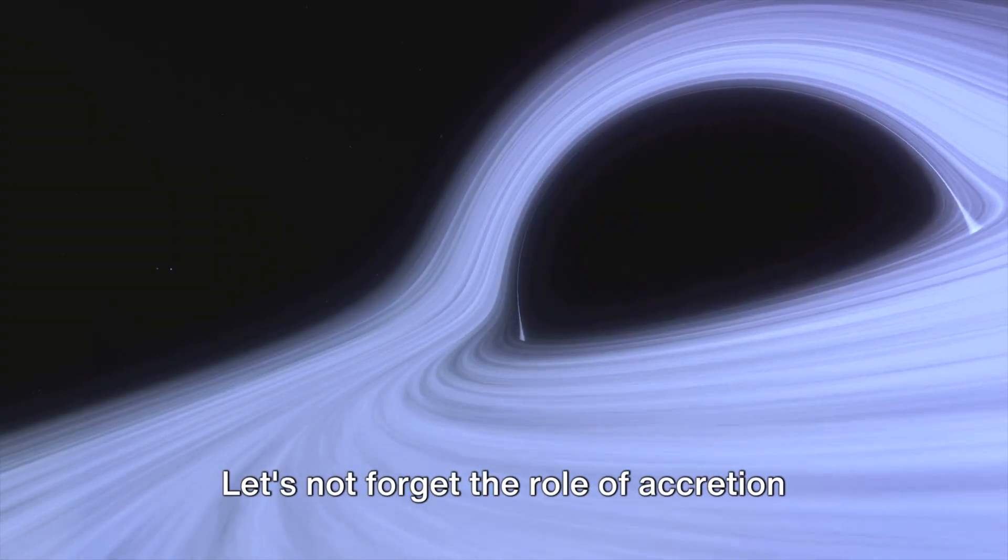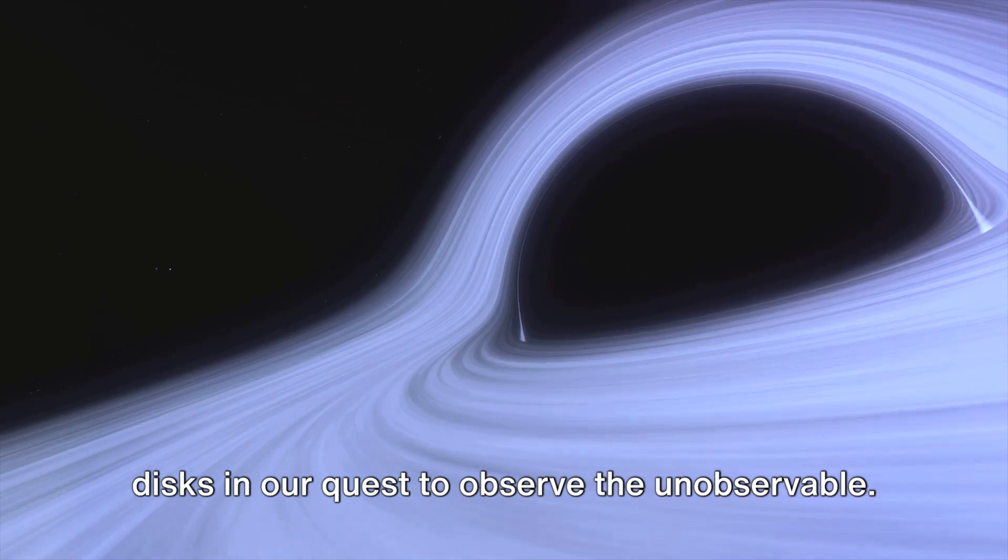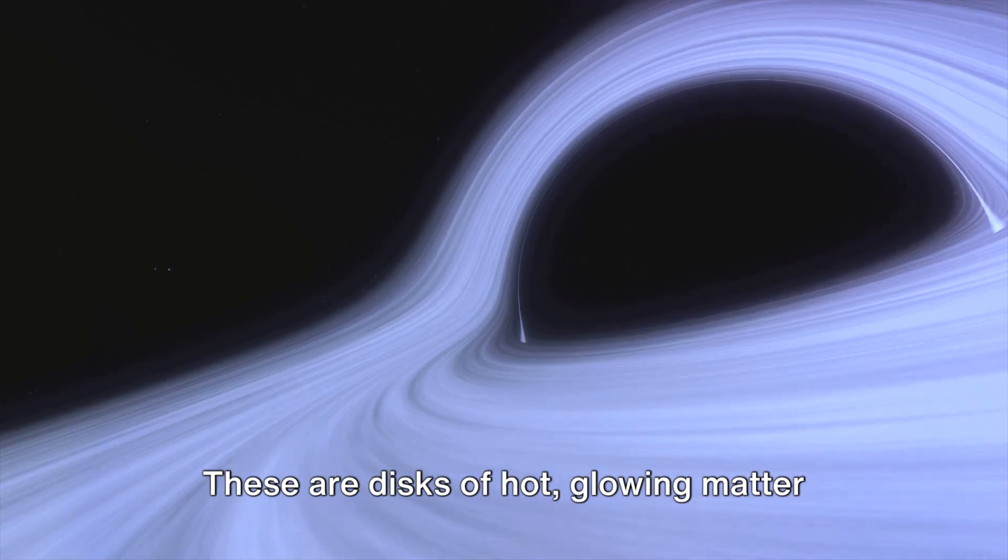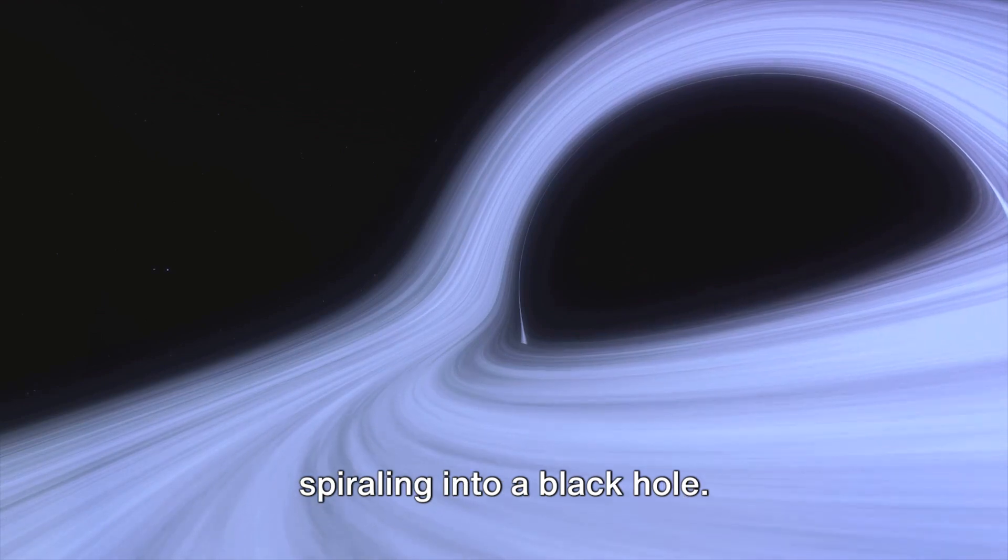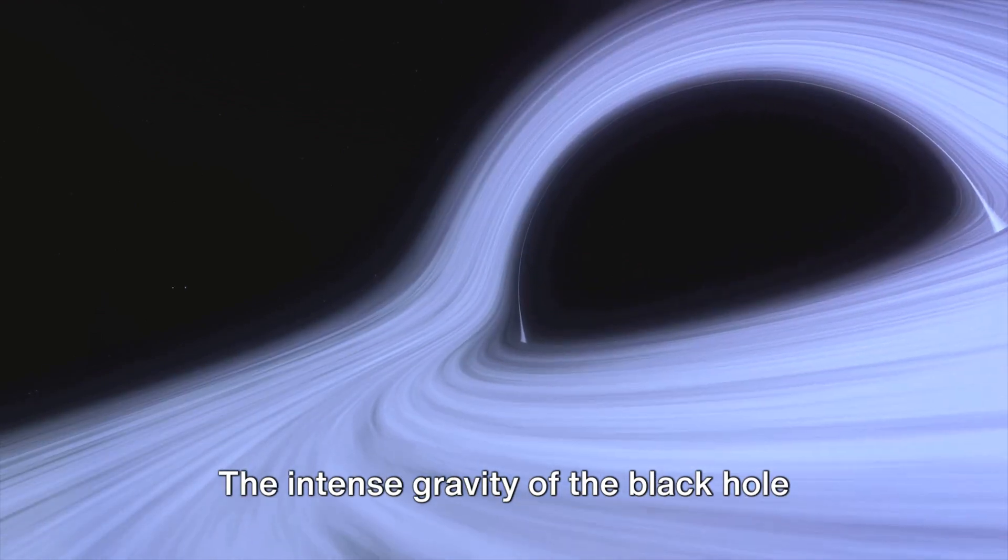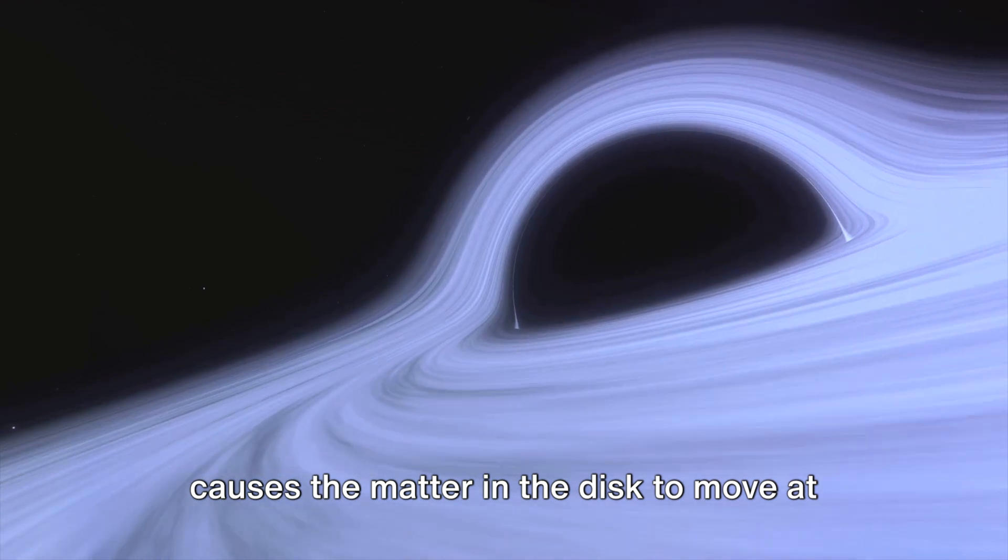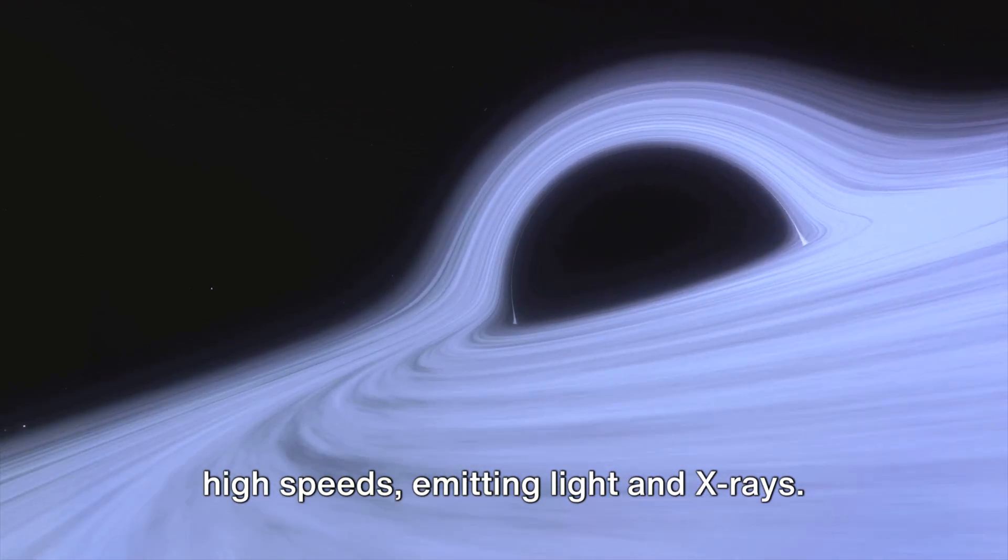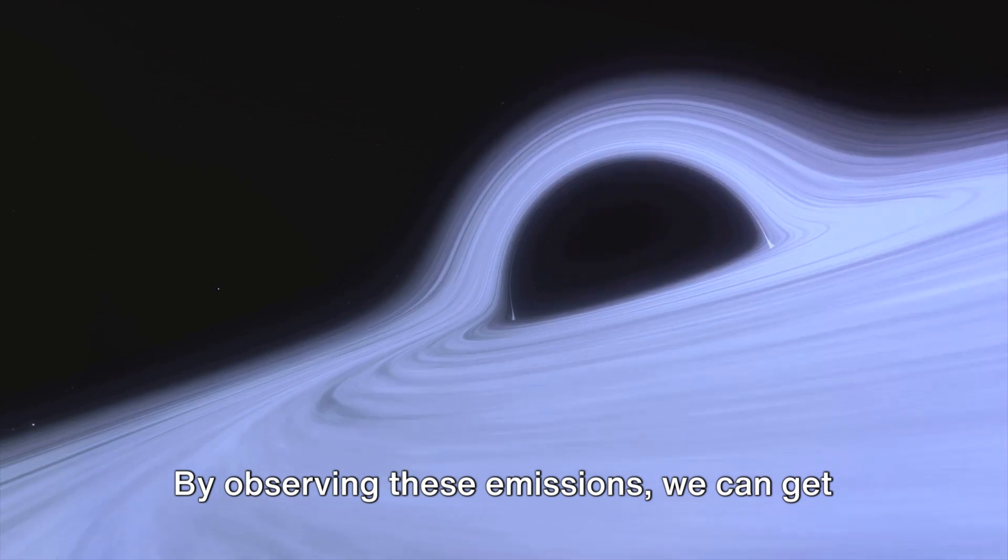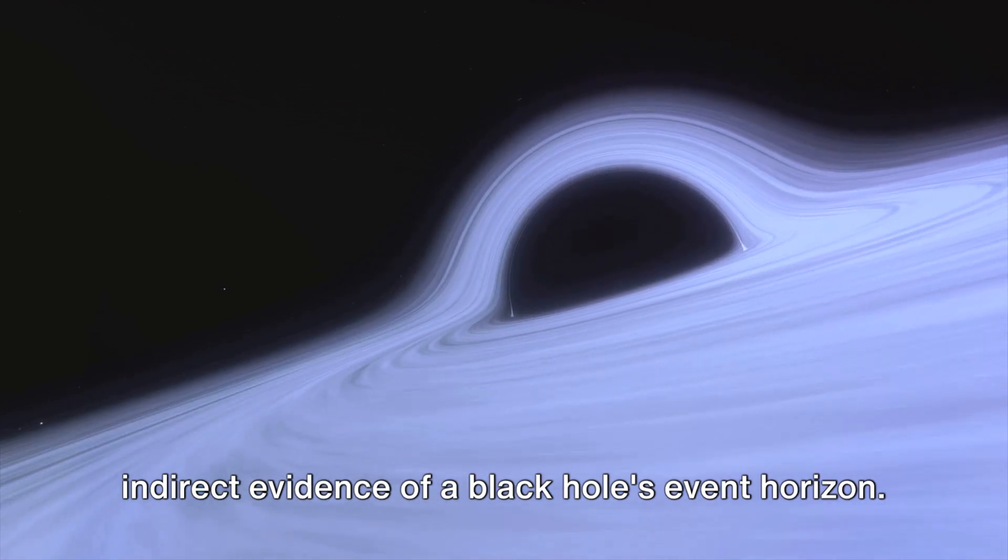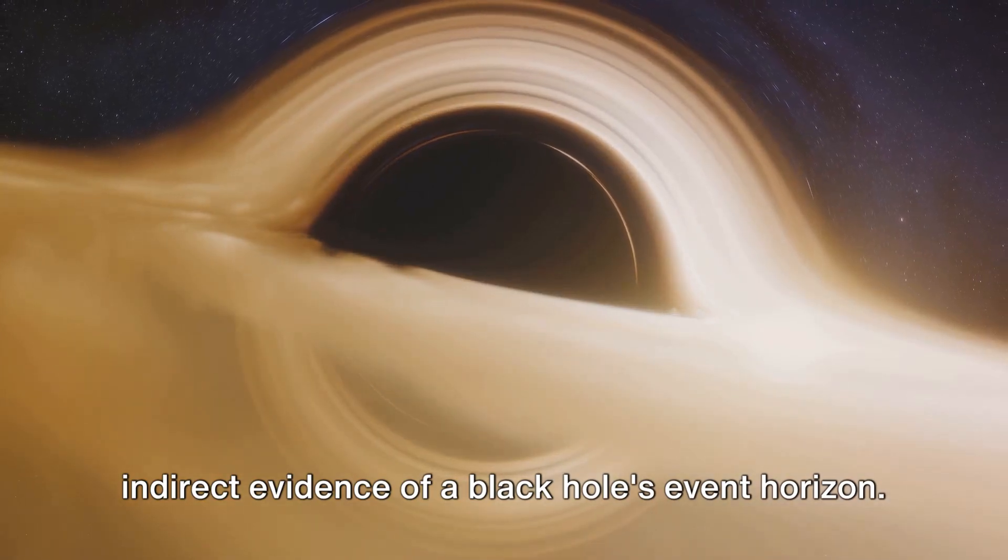Let's not forget the role of accretion disks in our quest to observe the unobservable. These are disks of hot, glowing matter spiraling into a black hole. The intense gravity of the black hole causes the matter in the disk to move at high speeds, emitting light and x-rays. By observing these emissions, we can get indirect evidence of a black hole's event horizon.